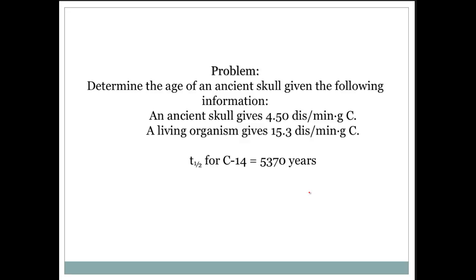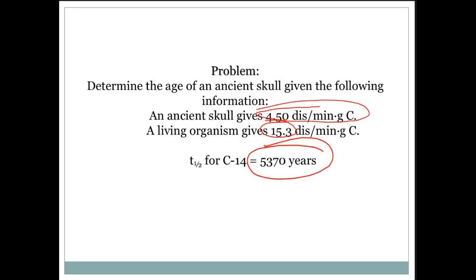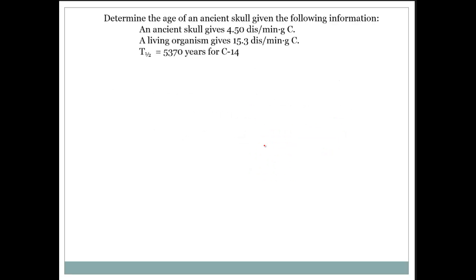Here's an example problem: determine the age of an ancient skull given the following information. The ancient skull has 4.5 disintegrations per minute per gram of carbon-14, while a living organism has 15.3. If the half-life of carbon-14 is 5,370 years, what's the age? First, you have to realize that radioactive isotopes have a half-life that follows first order kinetics. That means we can figure out the rate constant by solving for K.